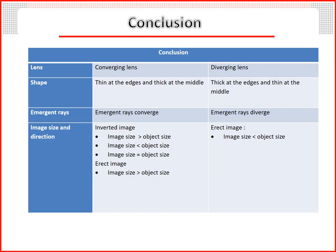As a conclusion: the converging lens is thin at the edges and thick at the middle, while the diverging lens is thick at the edges and thin at the middle. For the converging lens, the emergent rays converge; for the diverging lens, the emergent rays diverge. For the converging lens, the image may be inverted or erect. In the case of an inverted image, the image size may be smaller than, greater than, or equal to the size of the object. In the case of an erect image, the image size is always greater than the size of the object. For the diverging lens, the image is always erect and its size is always smaller than the object size.